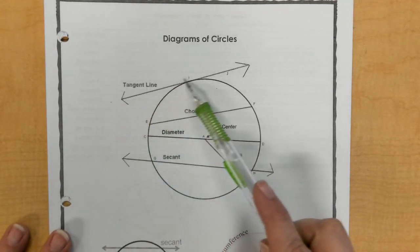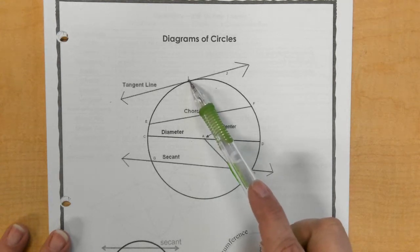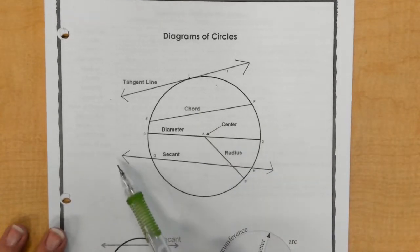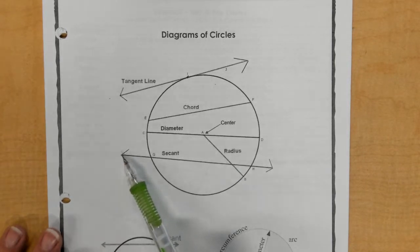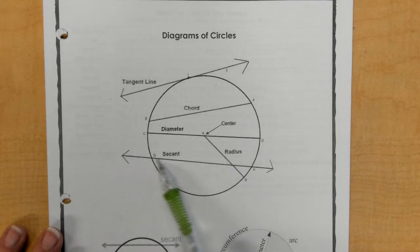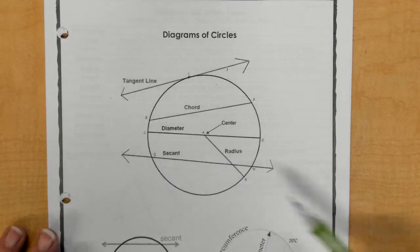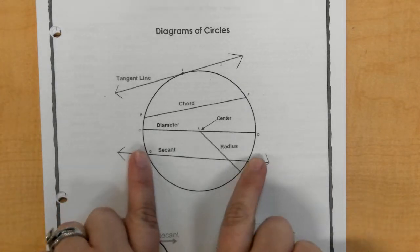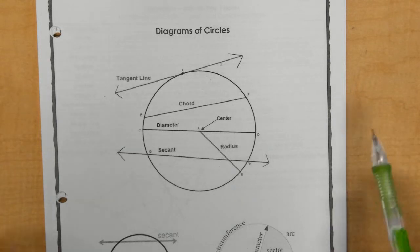Tangent line, where it touches the circle at one point. The point that it touches is called the point of tangency. Another new word might be secant, so a secant is a line or ray that goes all the way through the circle. So it will touch the circle at two points, but it goes all the way through.